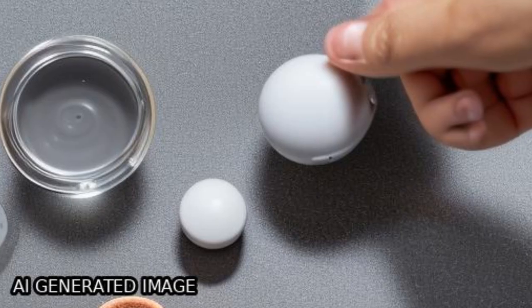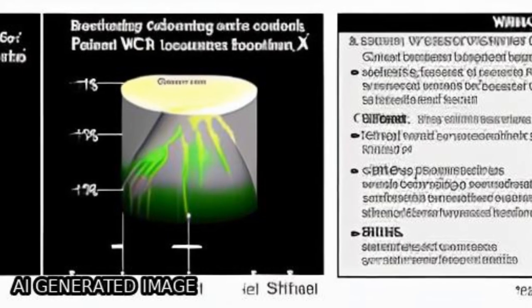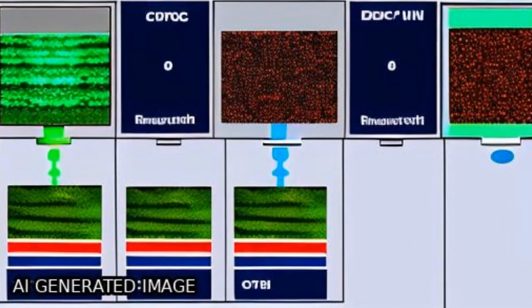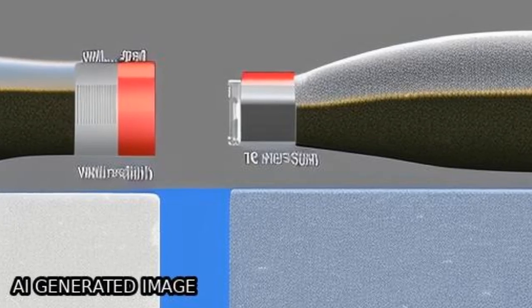WC-Cr3C2-Ni coating has higher hardness, elasticity modulus, and nano hardness values compared to WC-Ni coating.